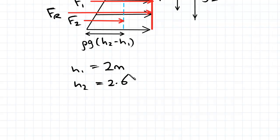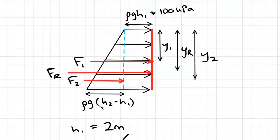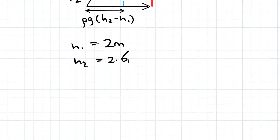Y1, the height from the top of the plate to the centroid of the square, is going to be half the height of the plate, so that's 0.3 meters. And Y2 is going to be 2 thirds of the height of the square plate, which is 0.4 meters. Now we know that using the pressure prism method.